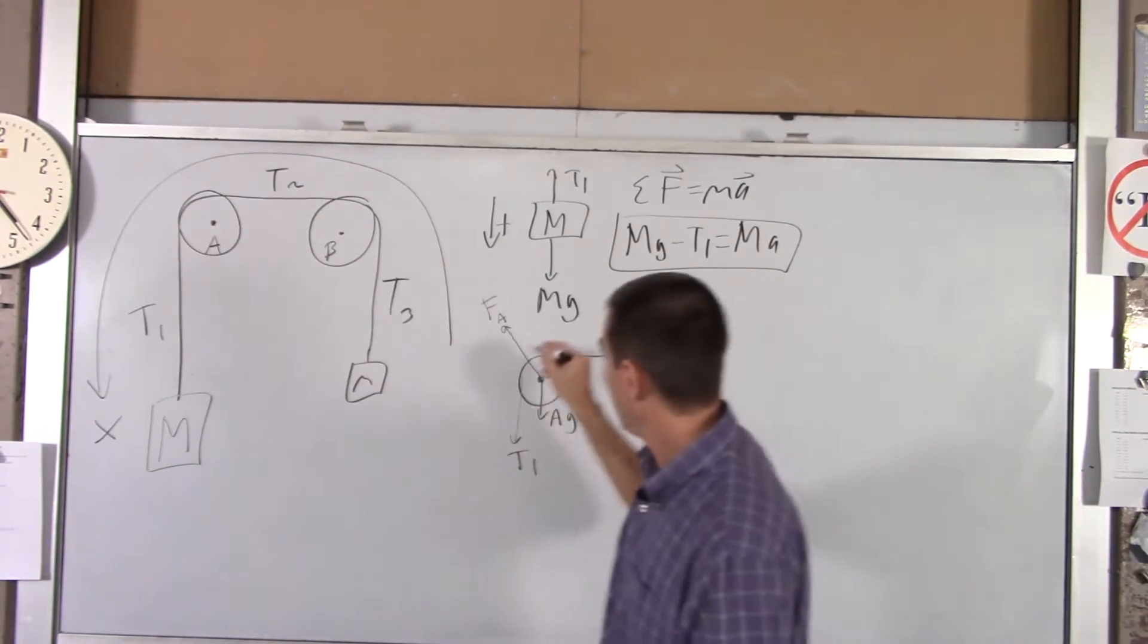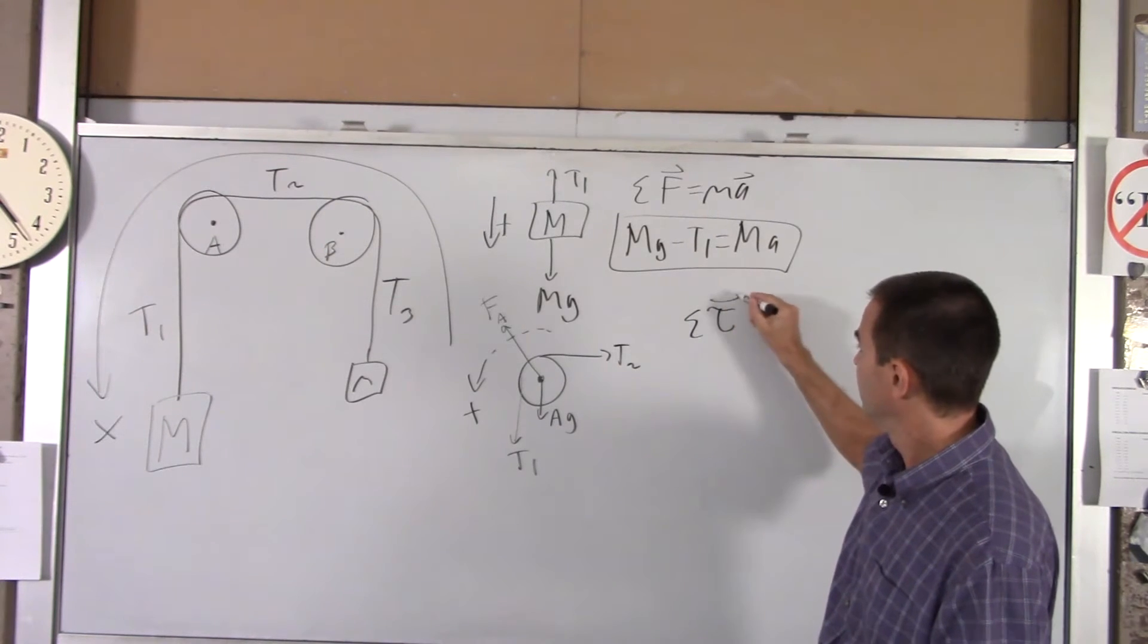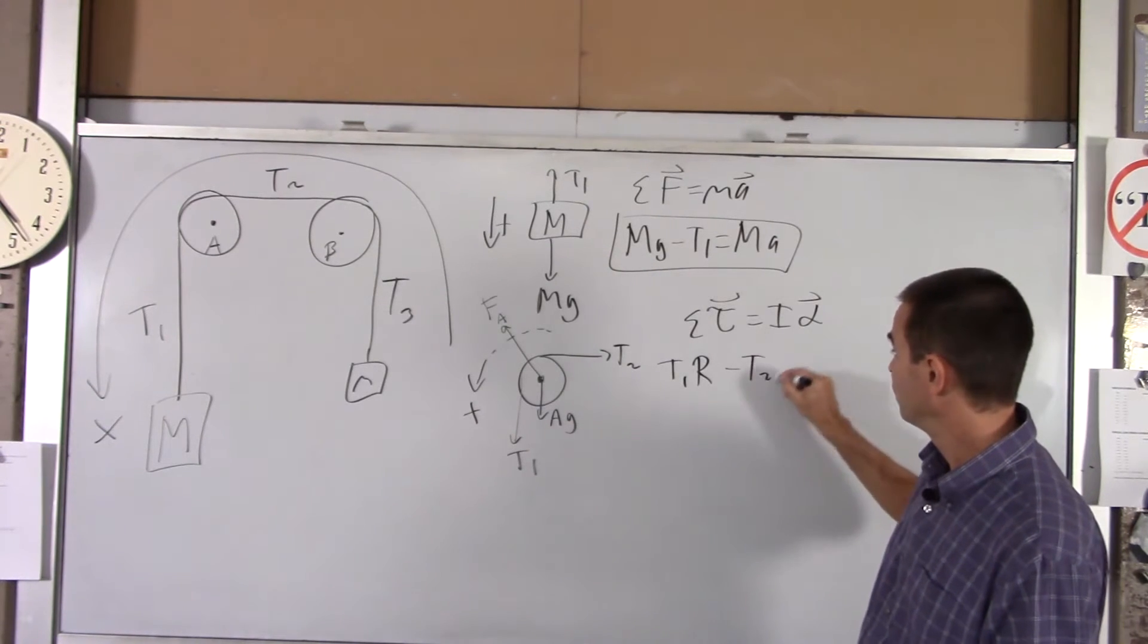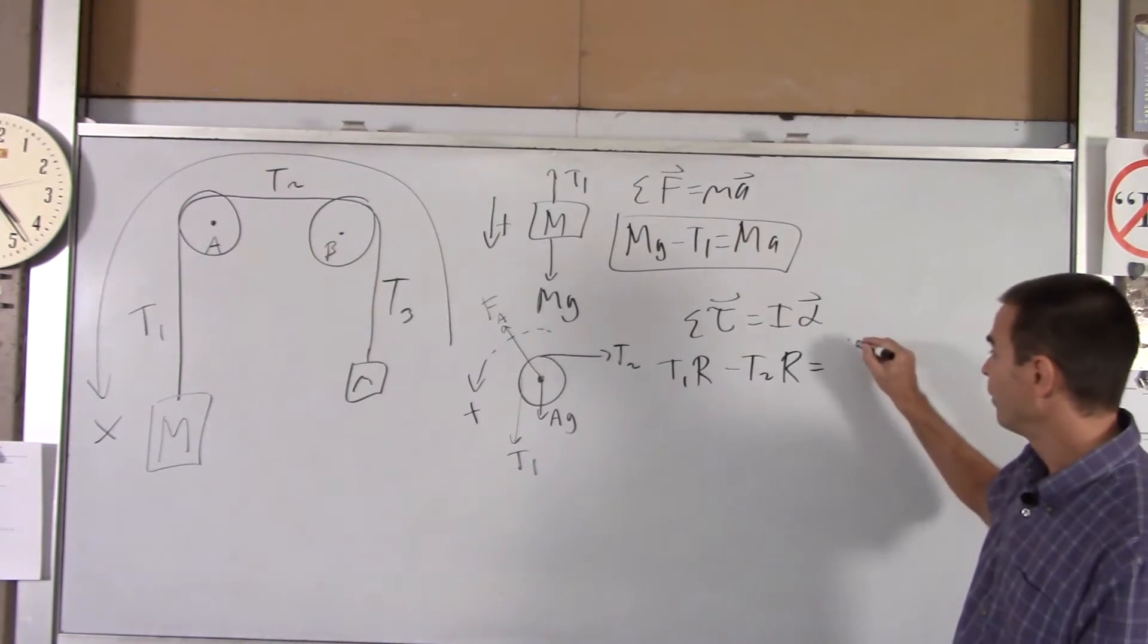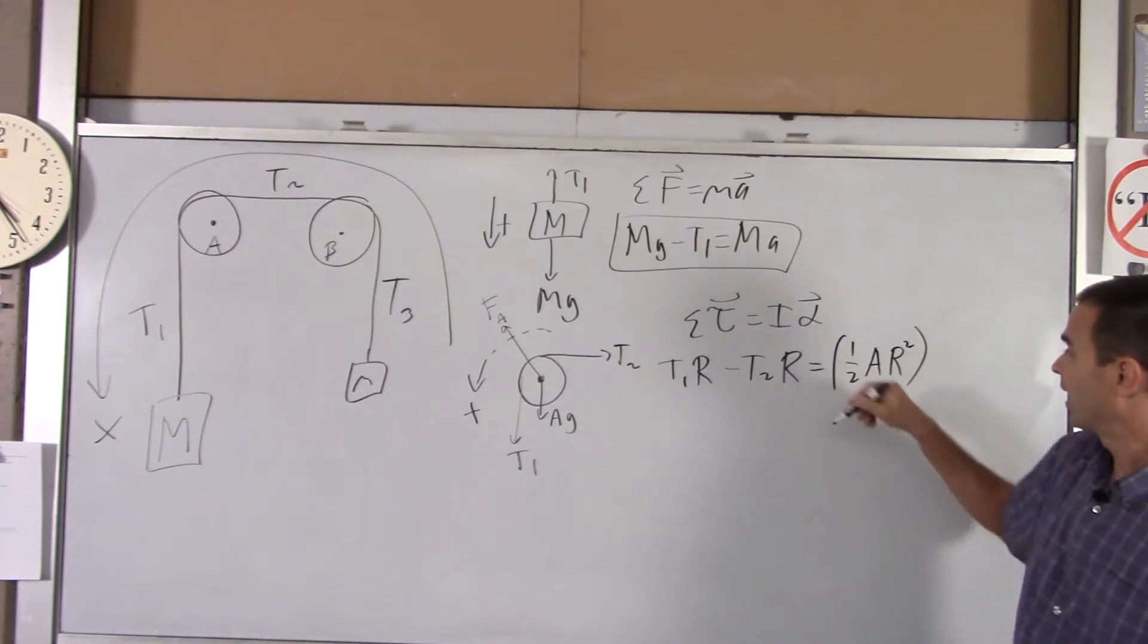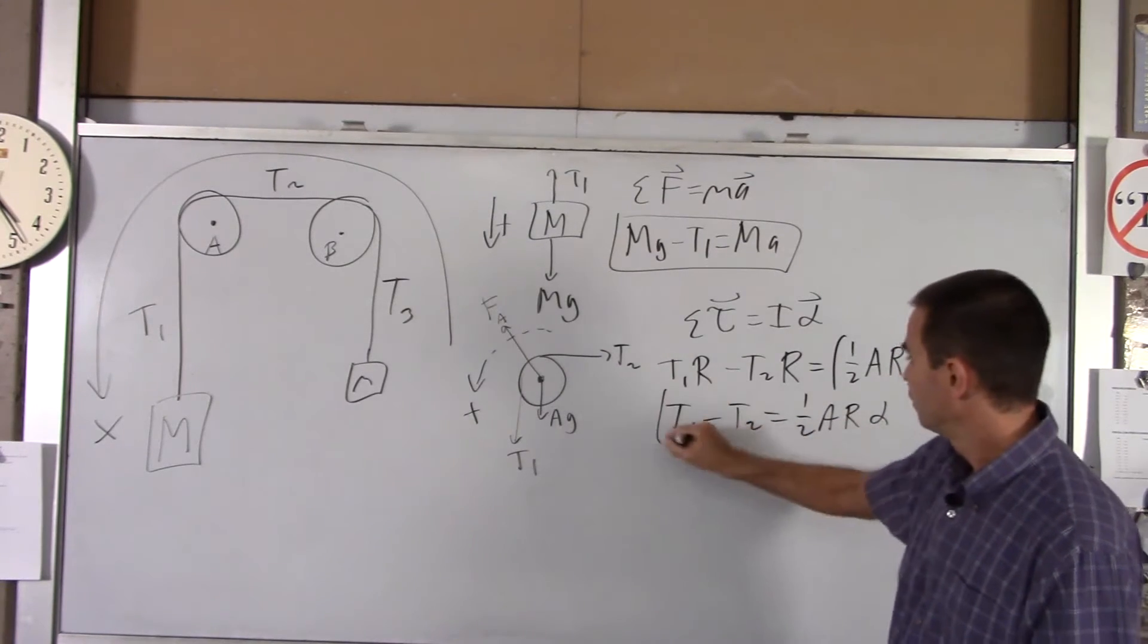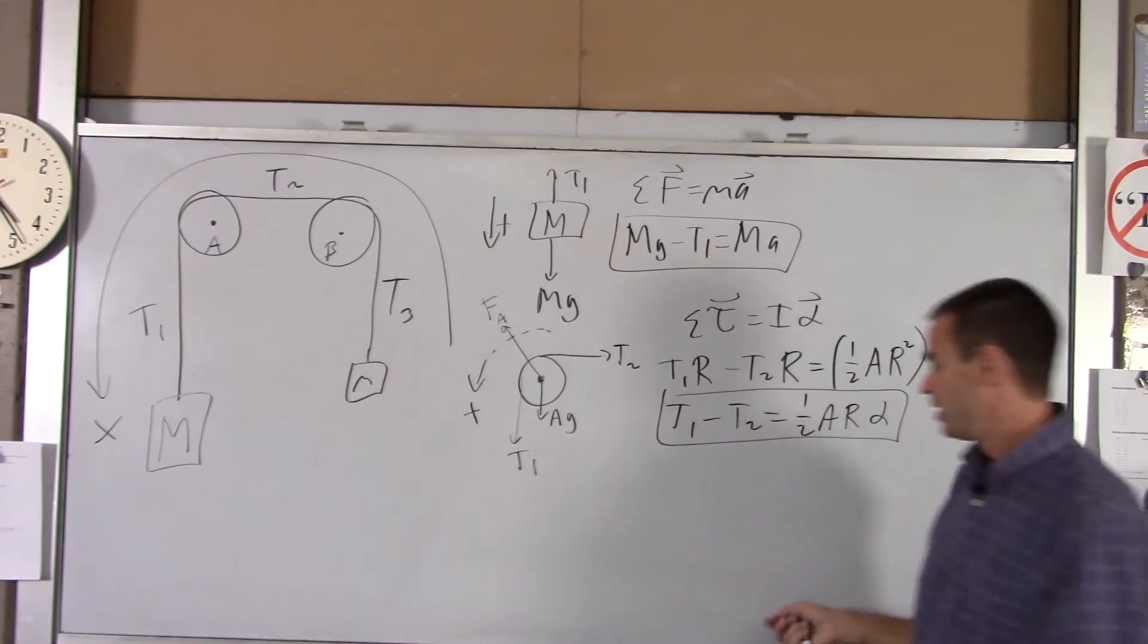For our system, counterclockwise is positive. So if I do net torque equals I alpha, the torque created by T1, that's positive. It'd be T1R. The torque created by T2, that'd be negative. It'd be minus T2R equals I. We're going to make the assumption that these are disks, solid disks. So the moment of inertia of a disk is 1 half M, which in this case is A, R squared times alpha. One of the R's drops out. So you've got T1 minus T2 equals 1 half AR alpha. We've got a second equation, but now we've got a total of four unknowns: T1, T2, acceleration, and alpha.